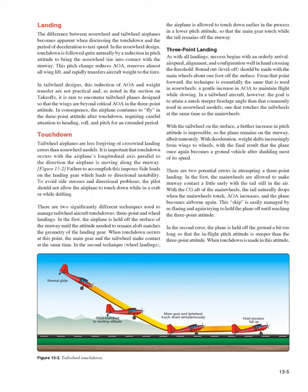For a three-point landing, success begins with an orderly arrival — proper airspeed, alignment, and configuration crossing the threshold. Round out and level off should be made with the main wheels about one foot off the surface. The technique is then similar to nosewheel landings — a gentle increase in AOA to maintain flight while slowing — but the goal is a much steeper fuselage angle so that the tailwheel touches simultaneously with the main wheels. With the tailwheel on the surface, a further increase in pitch attitude is impossible, so the plane remains on the runway.